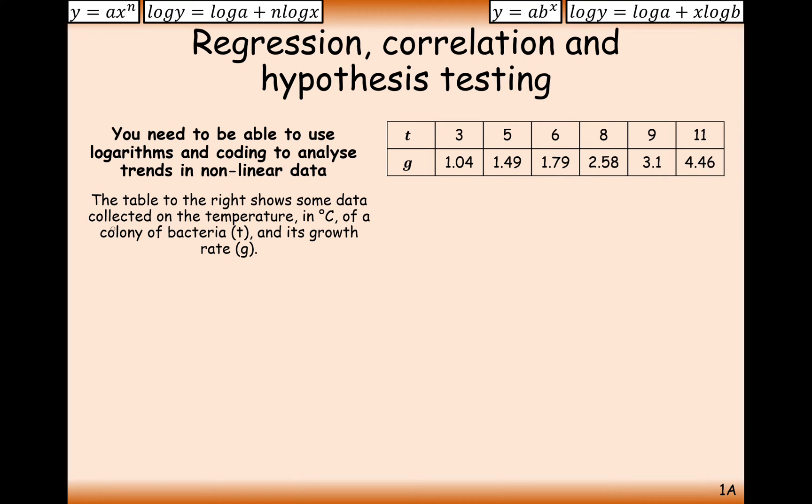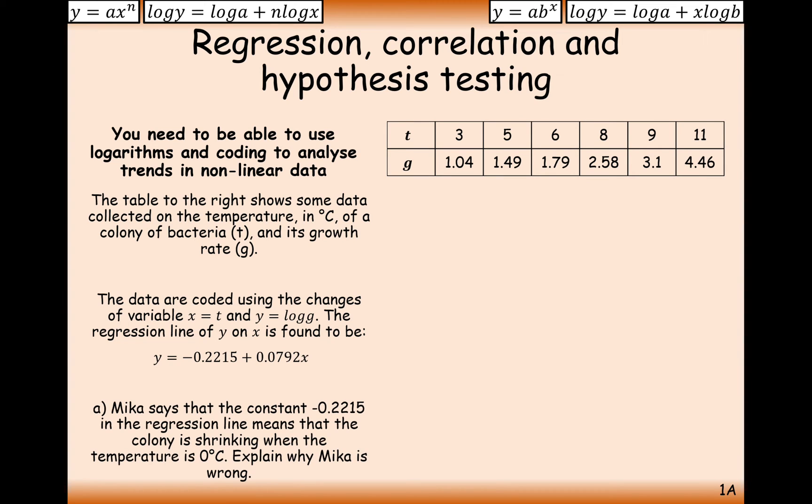Let's get stuck into a question. The table to the right shows some data collected on the temperature in degrees Celsius of a colony of bacteria and its growth rate. The data are coded using the changes of variable x equals t and y equals log g. The regression line of y on x can be found to be y equals minus 0.2215 plus 0.0792x.